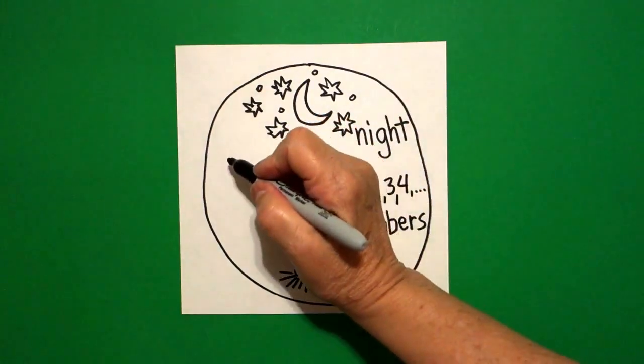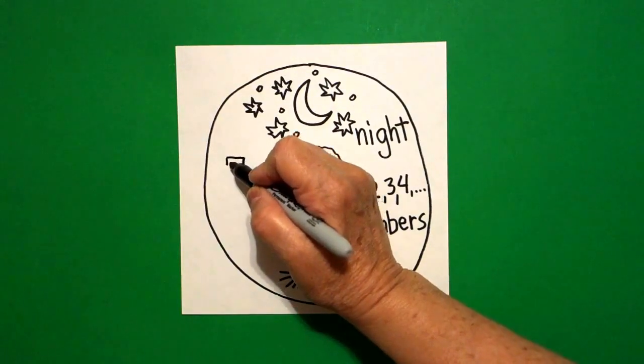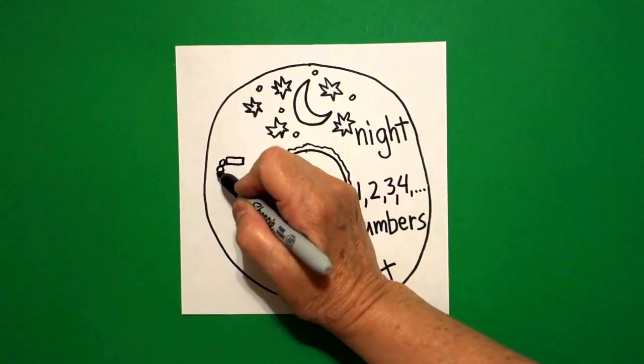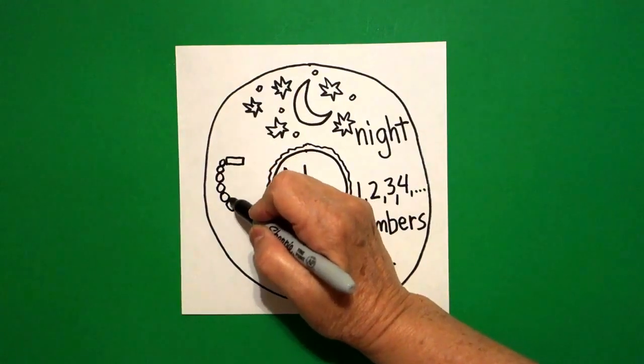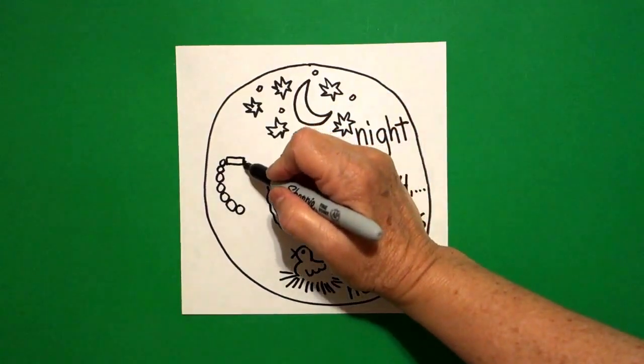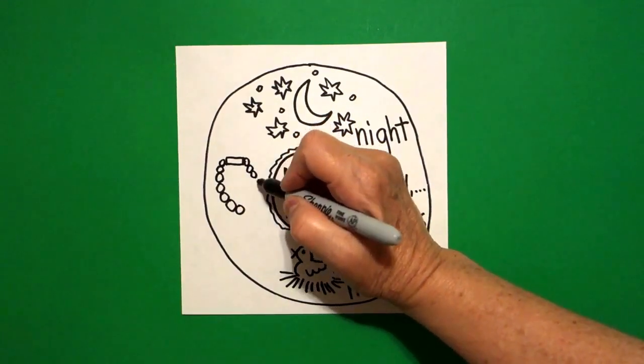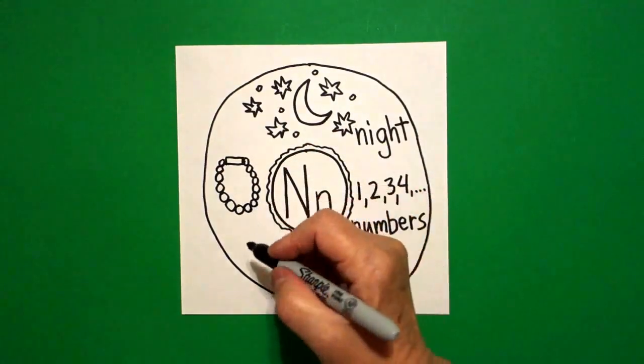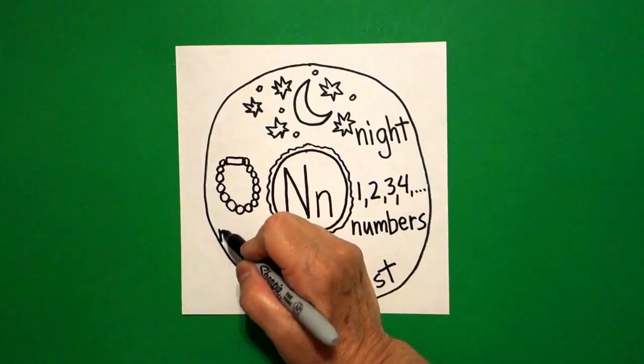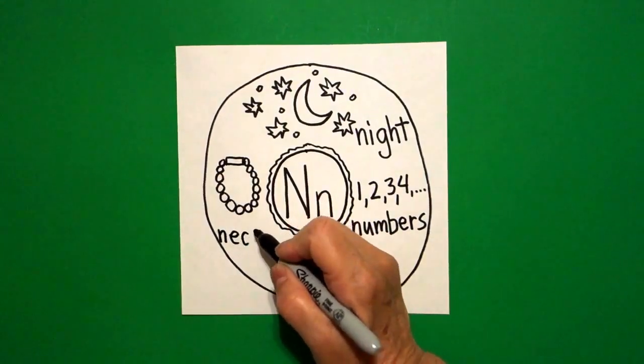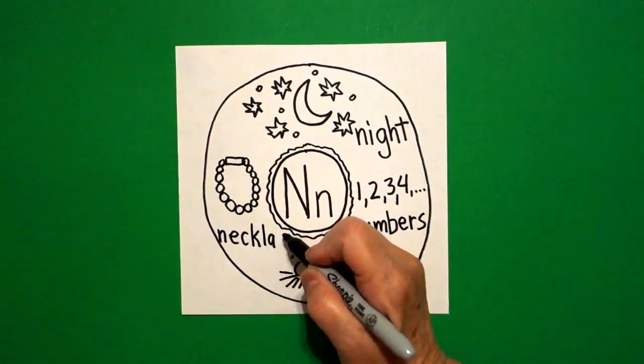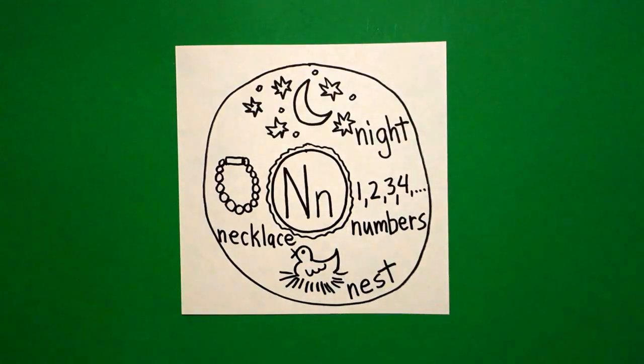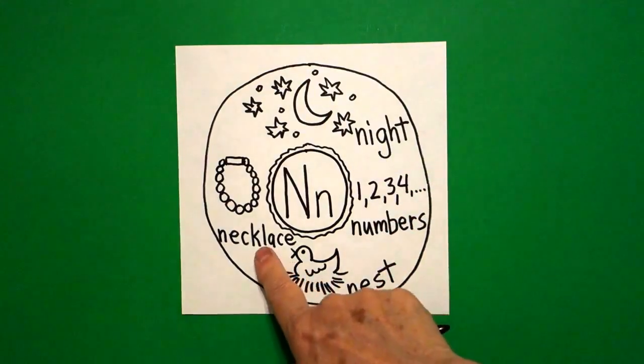Now, come over here on the left-hand side. We're going to draw a little skinny rectangle. Starting on the left, baby circle, keep going all the way around. Come up to the top, baby circle on the right, keep going, connect. This is a necklace. N-E-C-K-L-A-C-E. Necklace. Necklace, night, numbers, nest, necklace.